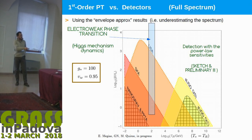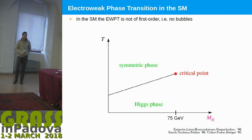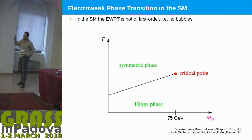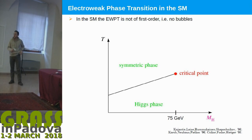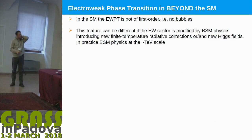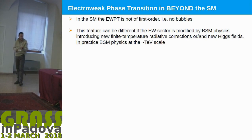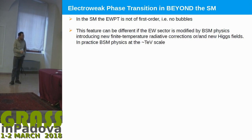Here you have the electroweak phase transition — this is the scale. The electroweak phase transition is particularly motivated because we are sure there is a Higgs mechanism breaking SU(2) × U(1). However, in the case of the standard model, this breaking occurs by a crossover. So you don't have formation of bubbles. You have bubbles and therefore the formation of a stochastic background only if the transition is of first order, which means you need physics beyond the standard model.